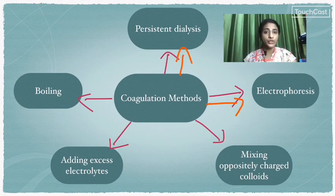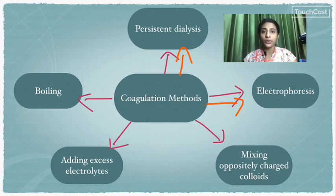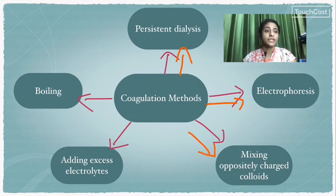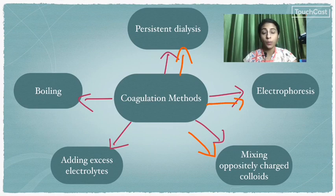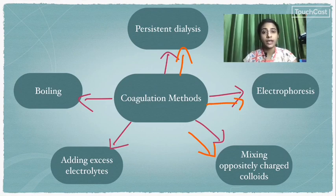Colloidal particles carry a charge. This method of coagulation uses the opposite charge. When two colloids of different charges are mixed — for example, ferric hydroxide sol, which is positively charged, and arsenic sulfide sol, which is negatively charged — they neutralize each other and form a precipitate, causing coagulation.